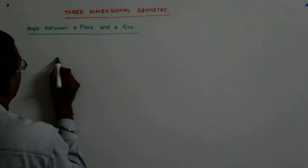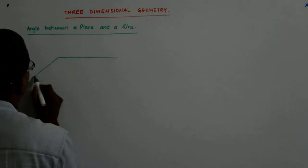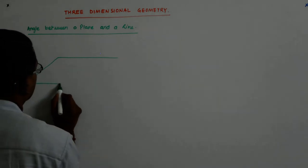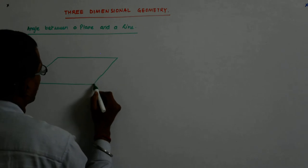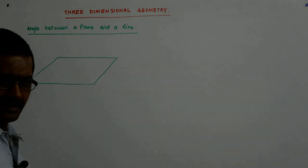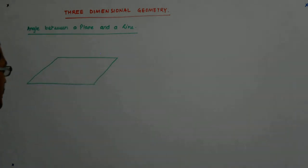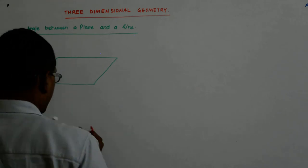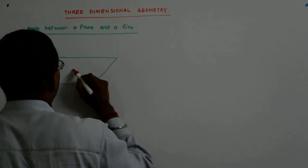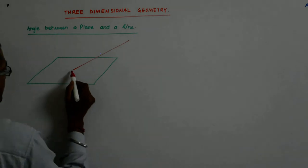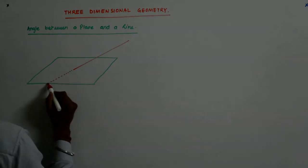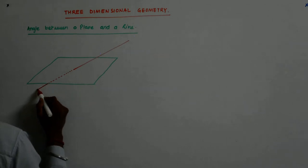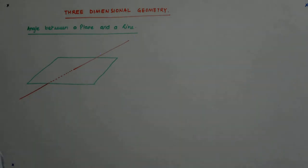So, just try to understand. Suppose I have a plane like this. I am showing it horizontal, it is not essentially so. This is just to see what is happening, right? And I have a line that is somehow like this.